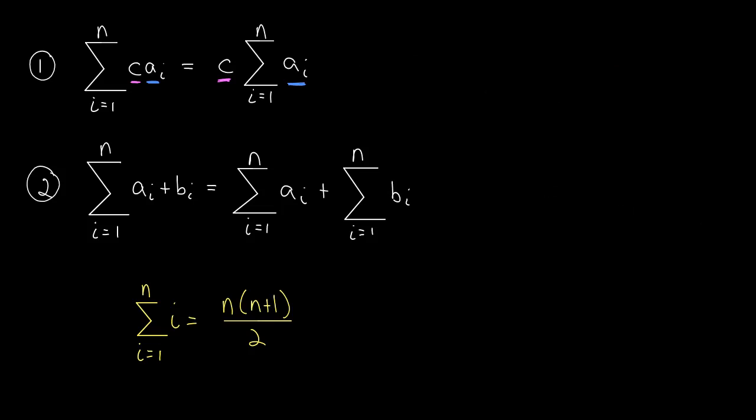How about we have the sum as i goes from 1 to n of i plus 7. Now we don't have a direct formula for this. But we do have the addition of two terms inside the sum. So our property 2 here tells us we can break this into two different sums.